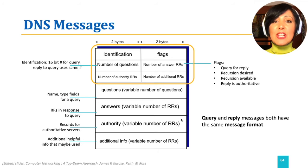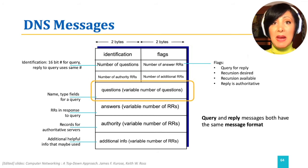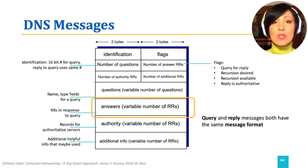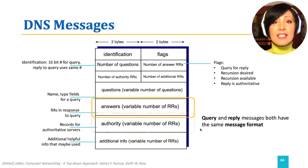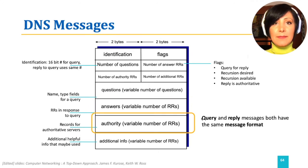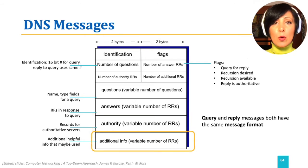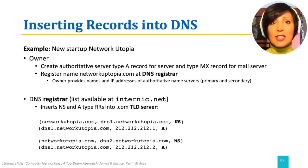The question section of the message contains the queries that are being made. The answer section contains the resource records in the answer to the original queries. The authority section contains records of other authoritative servers. The additional section contains some other records that might also be helpful.